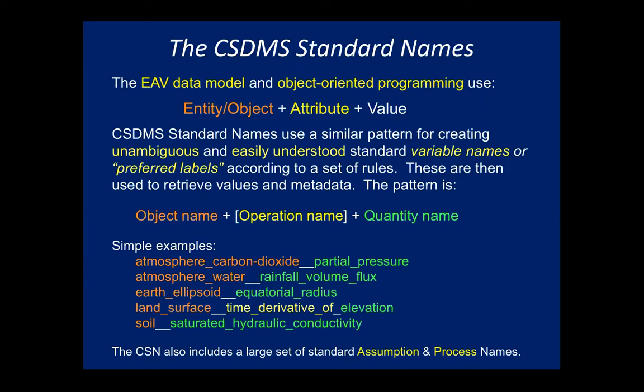In our upper ontology, operations act on quantities and create new quantities. When I apply time derivative to elevation, I get a new quantity with units modified to include 'per time.' We've identified about 150 different operation names needed to capture all the names that occur in models and datasets. In the serialized form, names have a double underscore to separate the object and quantity parts, 'of' to separate operations which can be chained, tildes for adjectives, and hyphens to bind words. Five delimiters total.